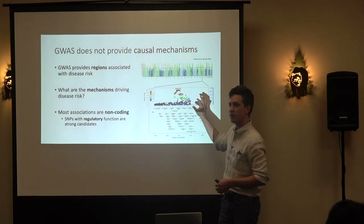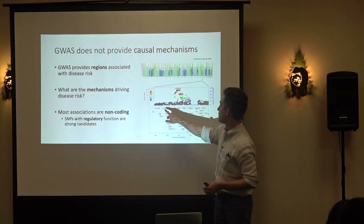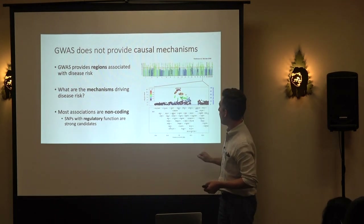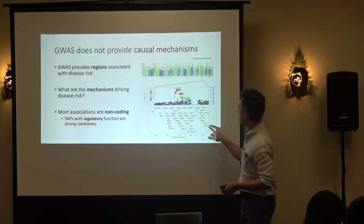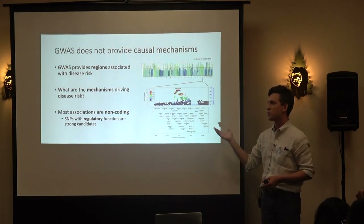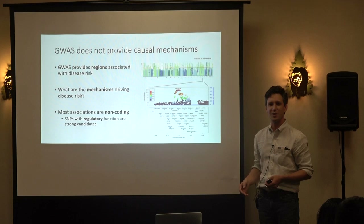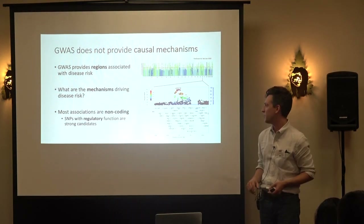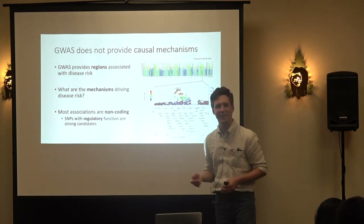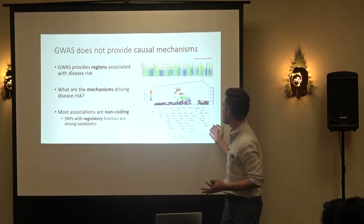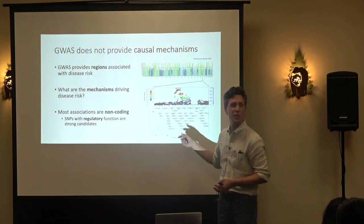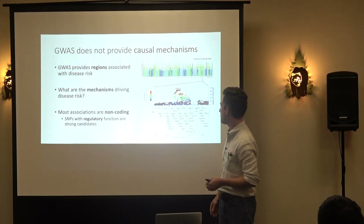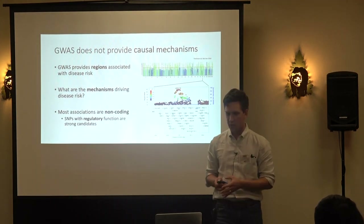Looking at a zoomed-in locus plot — the higher the point, the more associated with trait — all these genes in the region make it nearly impossible to tell which gene is driving risk. There's a large number of associations that look extremely important for schizophrenia, but which gene it maps to is not necessarily clear.